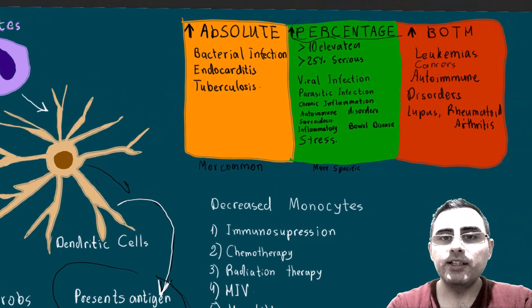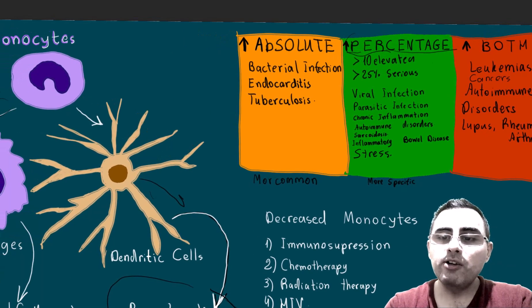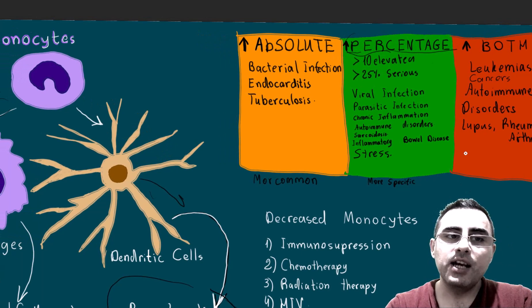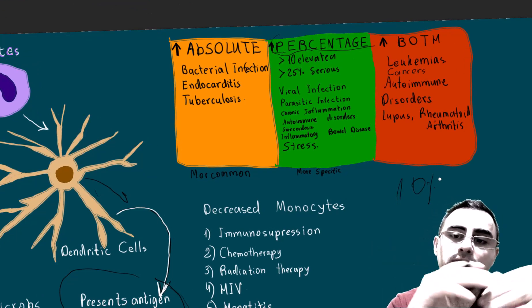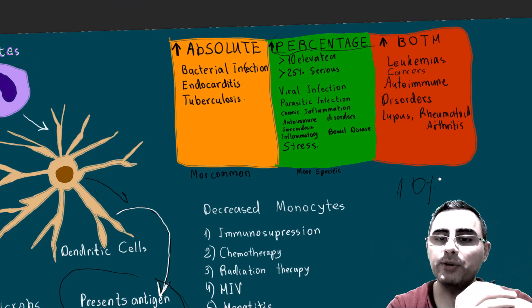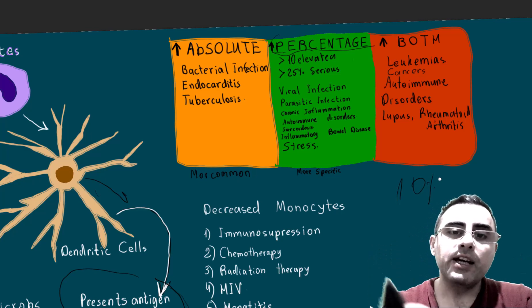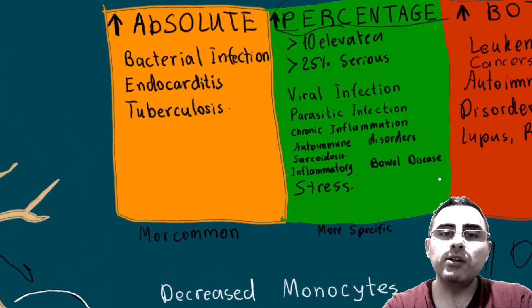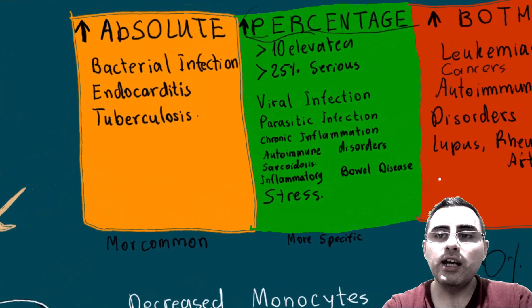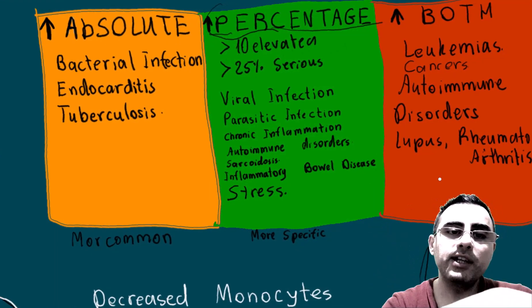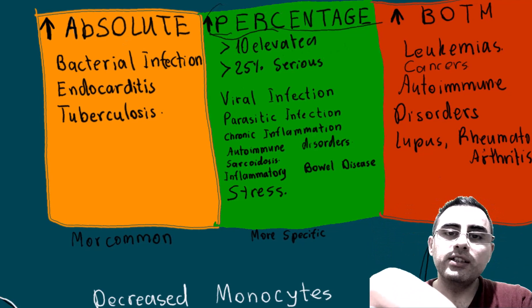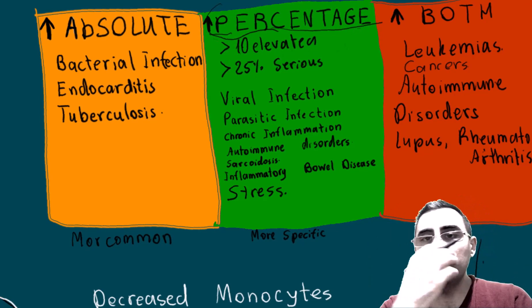Generally, among white blood cells, monocytes should be around 10 percent — that is the normal upper limit. Above 10 percent is already elevated. Let's look at what absolute elevation and percentage elevation each indicate, and which diseases can cause them.